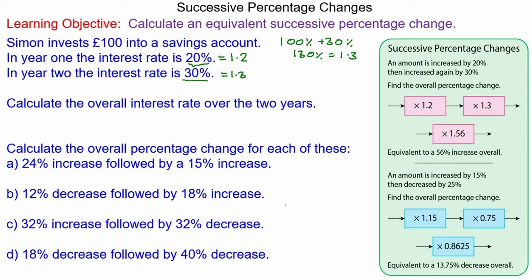A 100 pound investment gives you 100 pounds which is what you begin with, times 1.2 for your first year and times 1.3 for your second year, and that gives you an overall amount of 156 pounds. Using 100 pounds as your original, that gives you a 56 percent increase overall.